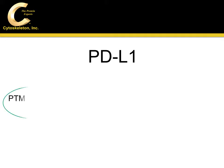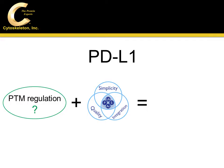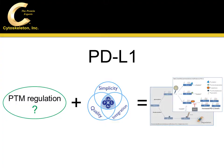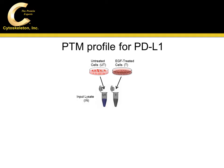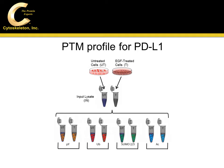Studying proteins with uncharacterized PTM profiles using the SignalSeeker kits provides an excellent opportunity to identify new regulatory mechanisms. To obtain the PD-L1 PTM profile, untreated or EGF-treated cells were lysed with Blaster lysis buffer. This allowed us to perform the immunoprecipitation of four PTMs in a single lysis system.